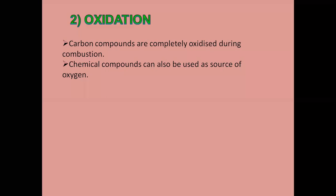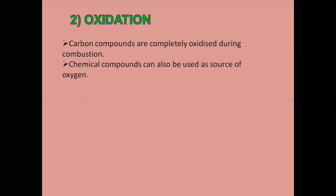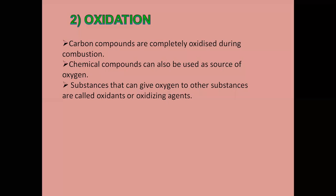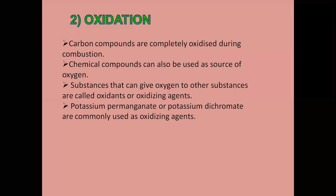Carbon compounds are completely oxidized during combustion. Chemical compounds can also be used as a source of oxygen. Substances that can give oxygen to other substances are called oxidants or oxidizing agents. This is a recap of what we did in the second chapter. Do you remember the names of the oxidizing agents? Two I have already shown you on the screen — potassium permanganate and potassium dichromate. Apart from that, we also discussed ozone. Potassium permanganate and potassium dichromate are the commonly used oxidizing agents.